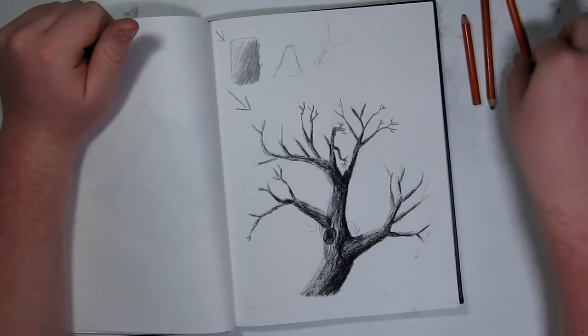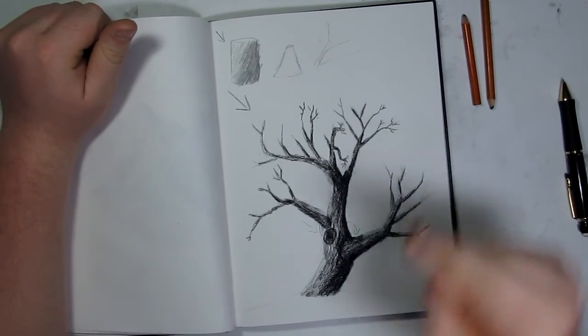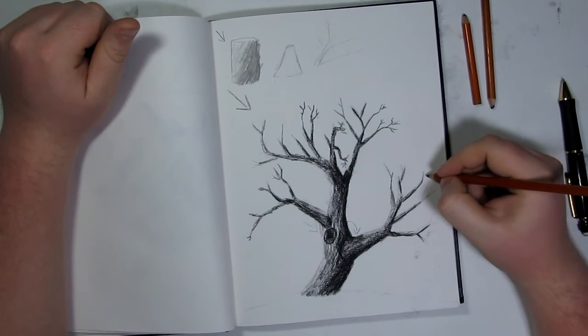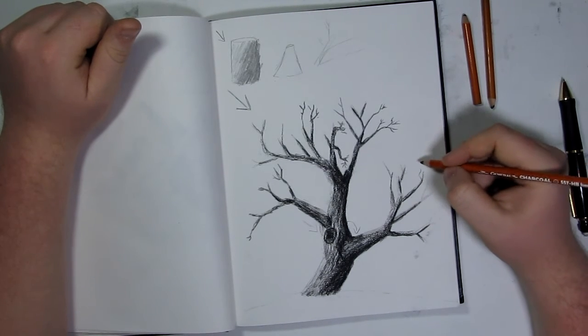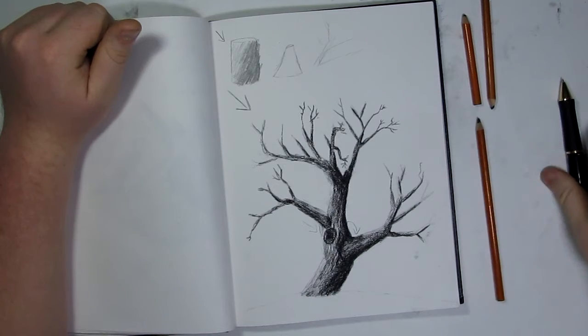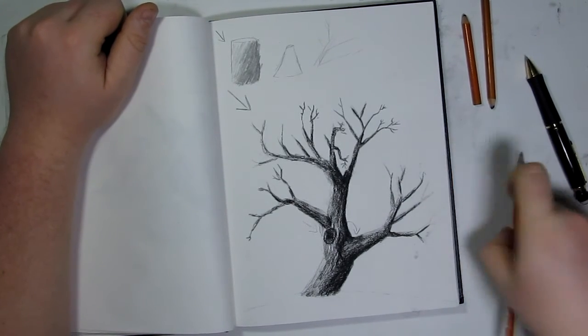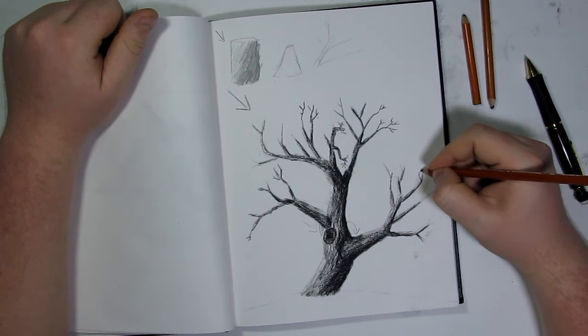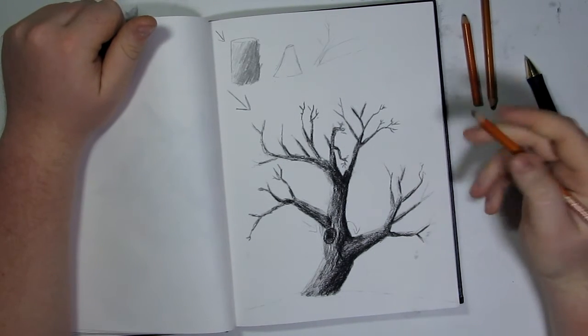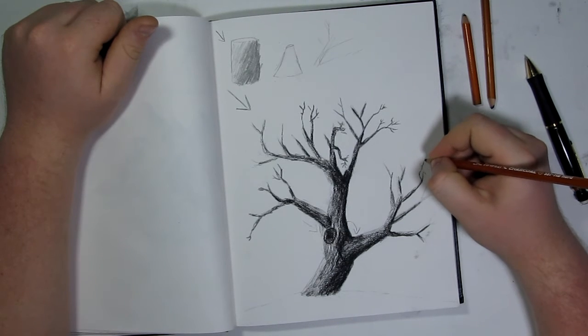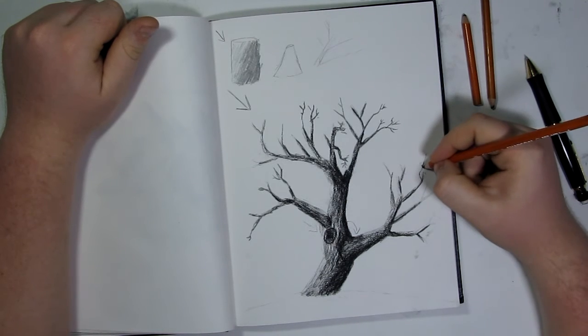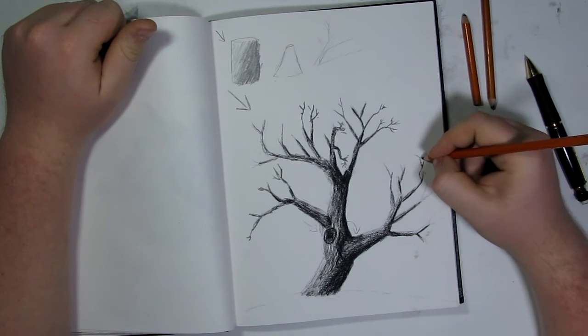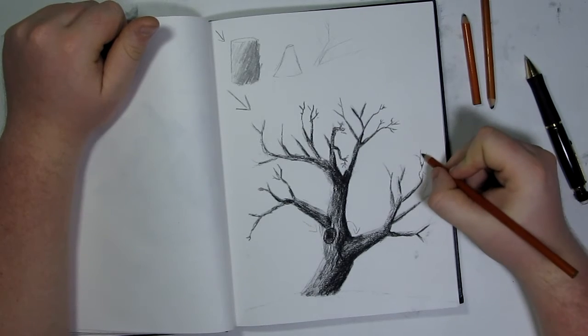I'm going to use the hard charcoal pencil and I'm going to start right here. The way I like to do this is to create a line that's almost like a lightning bolt. I say lightning bolt because of the movement, but you don't really want it to look like a lightning bolt, you just want to create a regular line. And then from any of these little points that create like a little hiccup point there, you want to use that to create another branch.